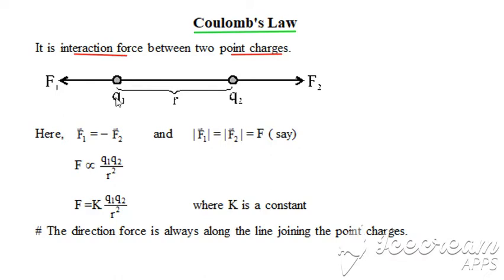Let's consider this figure in which Q₁ and Q₂ are two point charges, both positive in nature. They will be having interaction by forces F₁ and F₂. F₁ is the force on charge Q₁ due to charge Q₂, and F₂ is the force on charge Q₂ due to charge Q₁. These two forces are always equal in magnitude and opposite in direction.